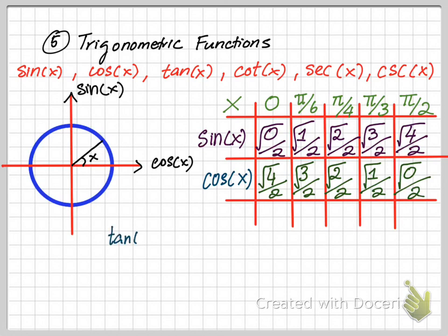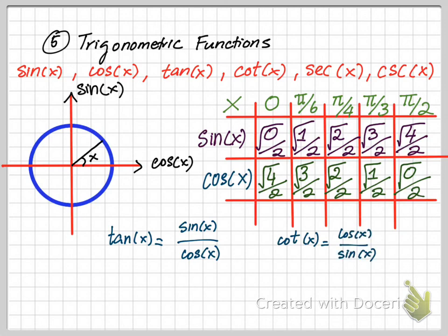As a reminder: tangent of x equals sine of x divided by cosine of x. Cotangent of x is the inverse of tangent, which equals cosine of x divided by sine of x. Secant of x equals 1 over cosine of x. And cosecant of x equals 1 over sine of x.